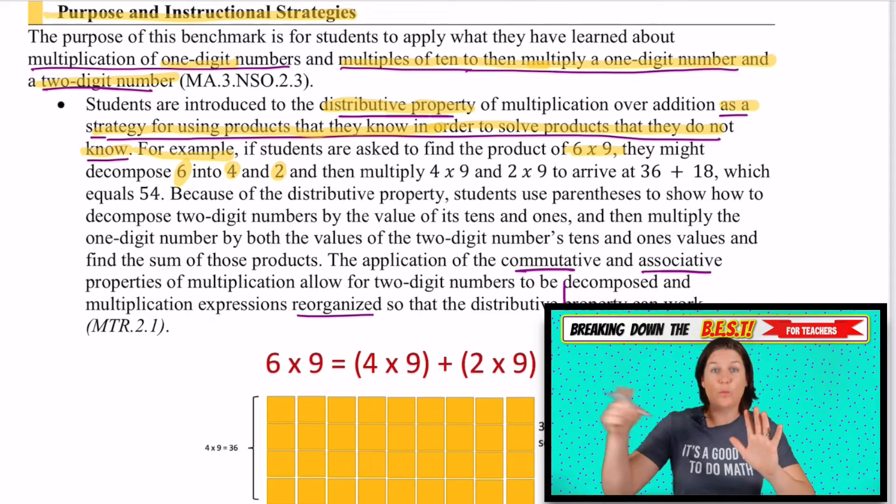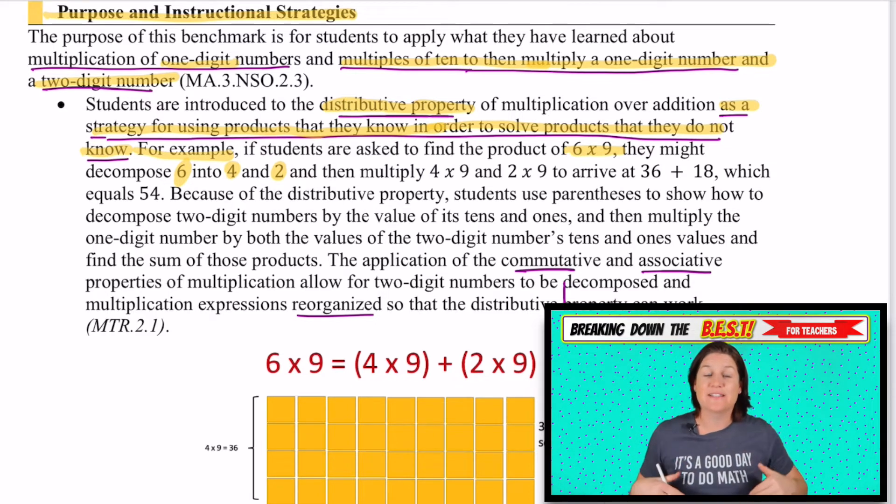That's 45. I need one more nine to get up to 54. When we talk like this and we think aloud like this, we are using the distributive property of multiplication. It's an incredible strategy. It's not a big, hairy, scary thing. It's a strategy that our students need to know.